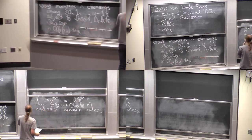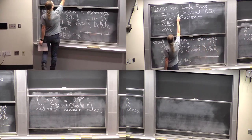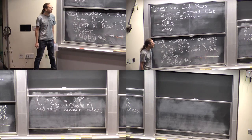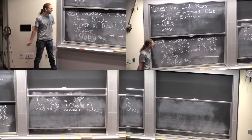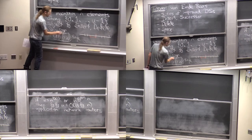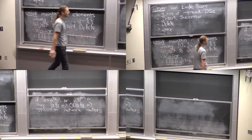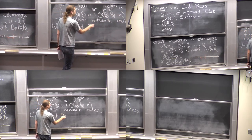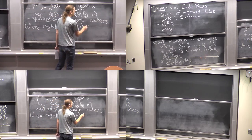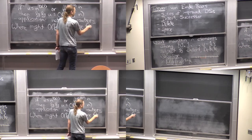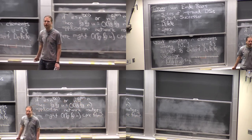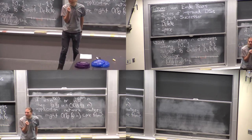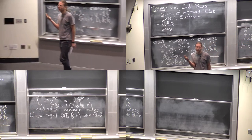So we want to shoot for log log u. We're going to get there by a series of improvements on a very simple idea. This is not the original way that Van Emde Boas got to this concept, but it's the modern take on it — the one that's in the textbook. The first question is: how might we get a log log u bound? Where might that come from?